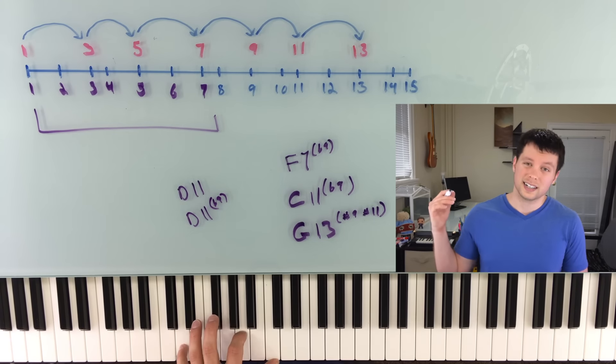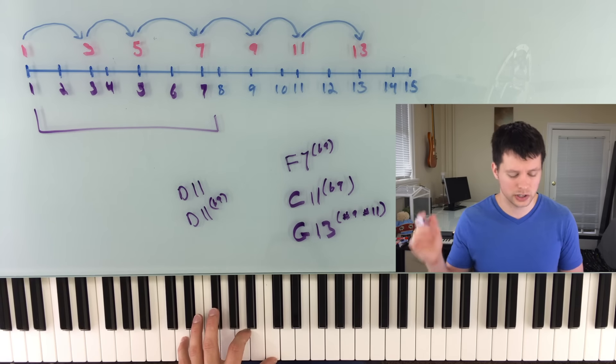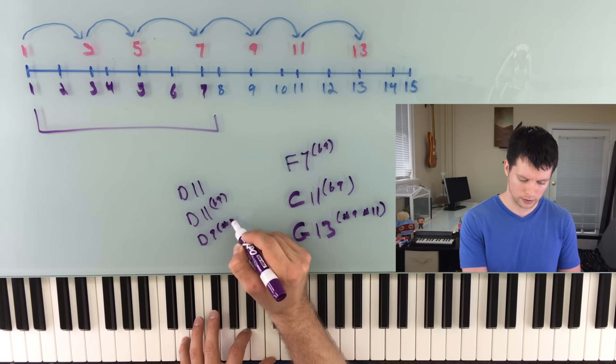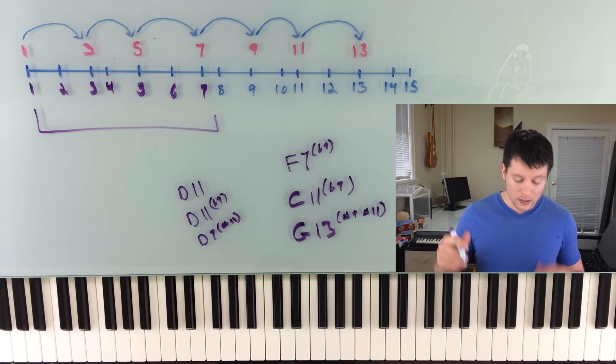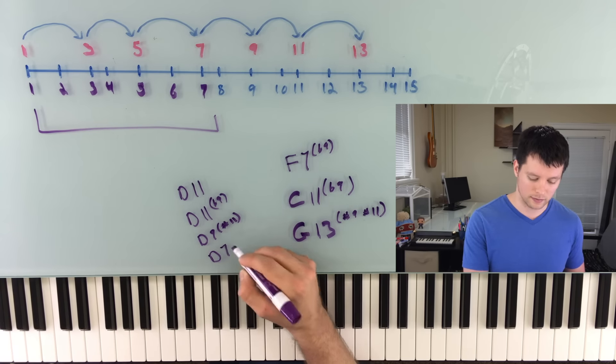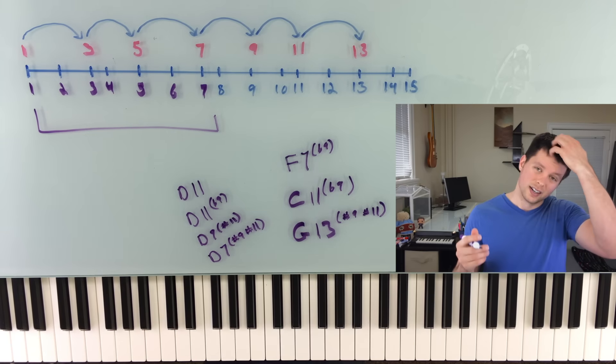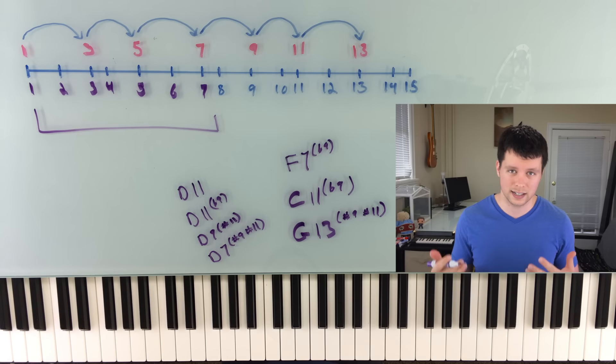So if I was going to do a D dominant 11, I'd write it like that and play it like that. If I wanted to flat the nine, I would just write D11 flat nine, like that. If I wanted to, let's say, sharp the 11, I can't write 11 as that last number anymore because I'm going to alter it. So I'd write D dominant nine. Sharp 11. Same thing. If I wanted to do both, I'd have to back up even further. So it would become a D dominant seven and then sharp nine, sharp 11, something like that. Anyway, like I said, it's kind of cumbersome and a little bit confusing. If you have questions, just ask and I'll try to give more examples in the comments. Like I said, don't get too hung up. It's just the way we do it.